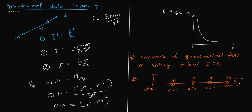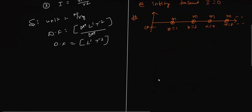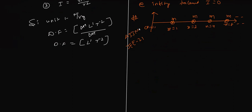This question was asked twice in competitive exams — once in JEE 2019, once in JEE 2021, and also in AIIMS. All intensities due to each mass point toward the origin in the same direction, so they all add up.